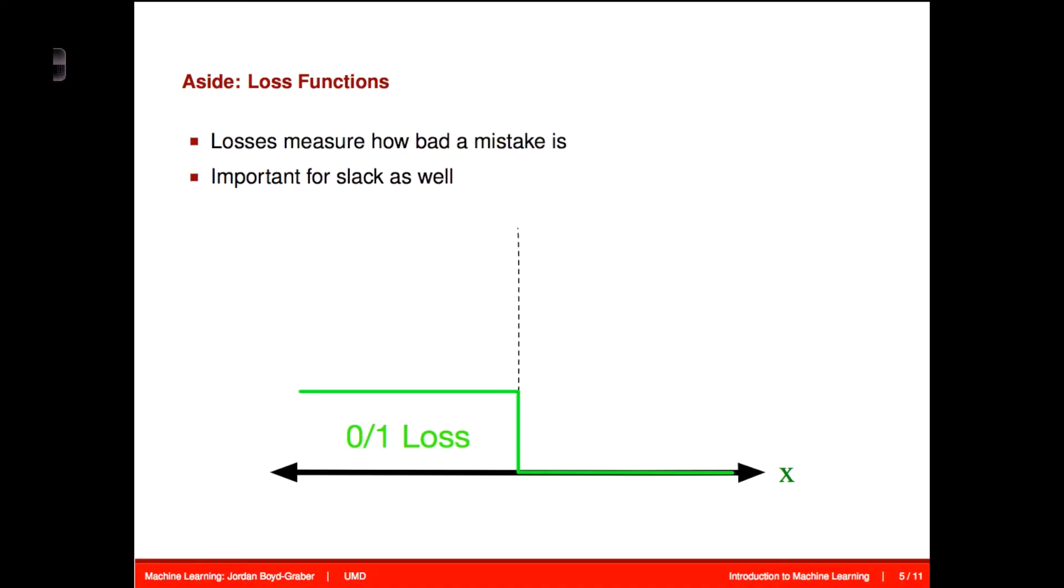Functions are often called loss functions because they tell you how bad a mistake is. When we move into deep learning, we'll see many more of these loss functions and they'll increase in importance. This is our first foray into choosing a different loss function for our problems. For logistic regression, we just assumed that we were using logistic loss. So let's talk a little bit more about these loss functions.